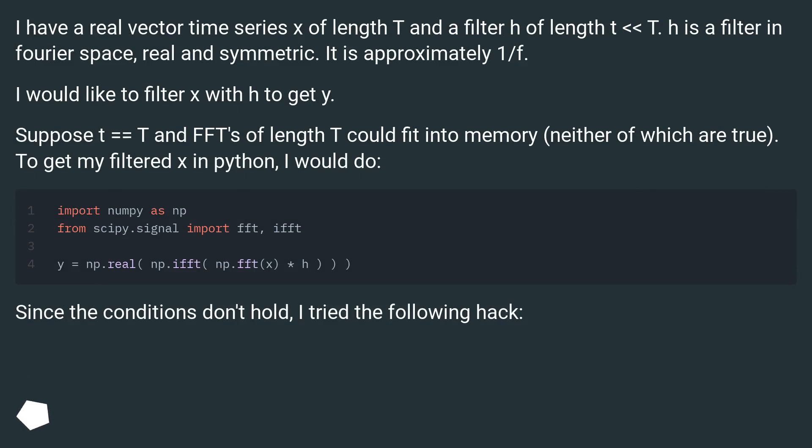I have a real vector time series x of length T and a filter h of length less than T. h is a filter in Fourier space, real and symmetric. It is approximately 1/f. I would like to filter x with h to get y.